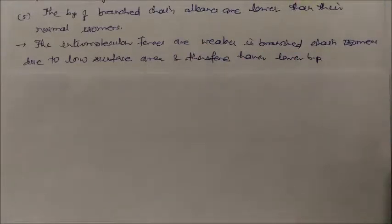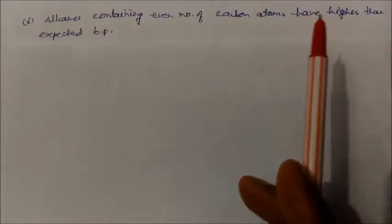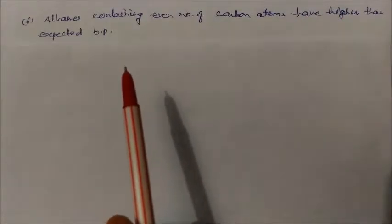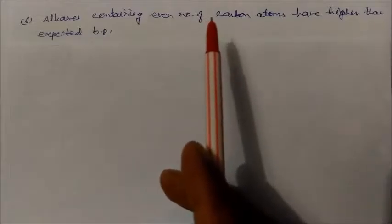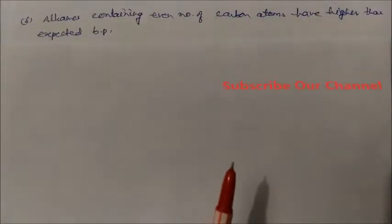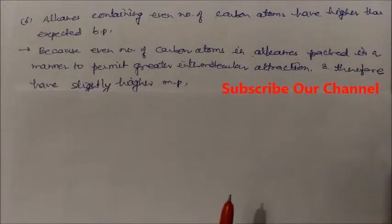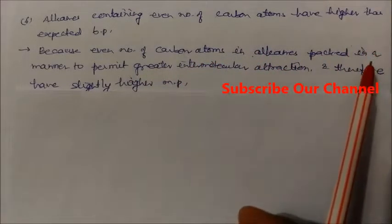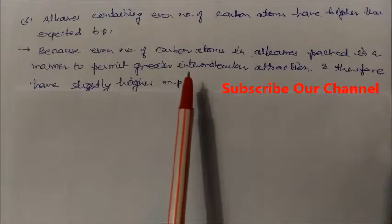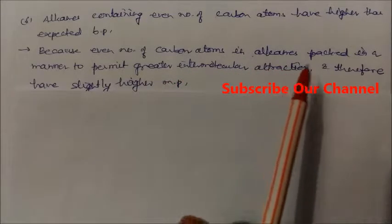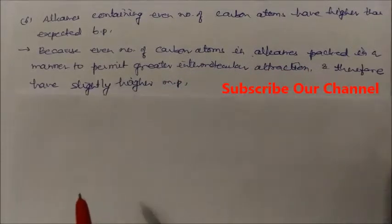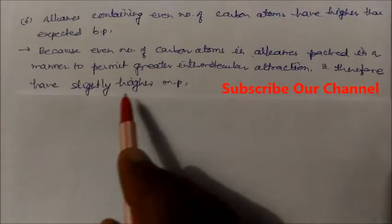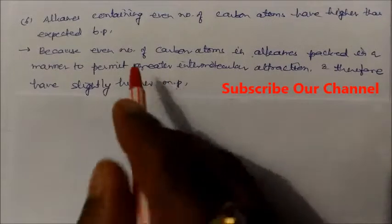Alkanes containing an even number of carbon atoms have a higher than expected boiling point. The reason is that in alkanes with an even number of carbon atoms, they are packed in a manner that permits greater intermolecular forces of attraction, therefore their boiling point is slightly higher.